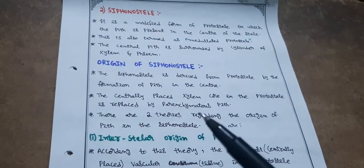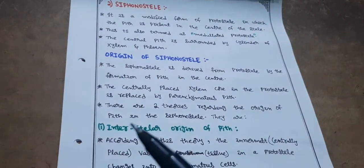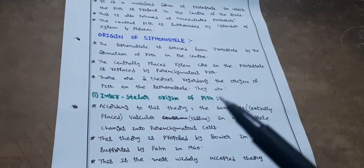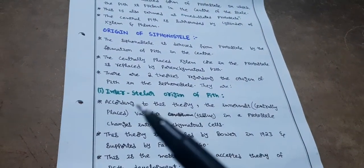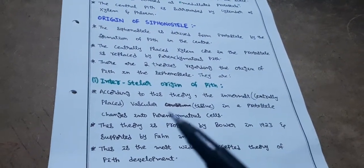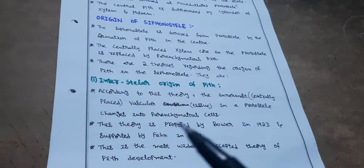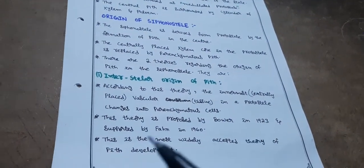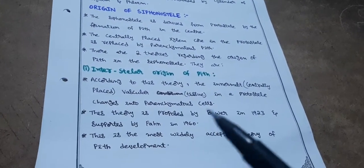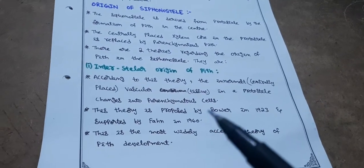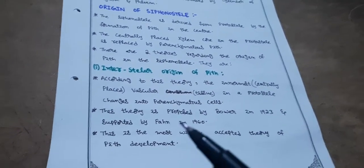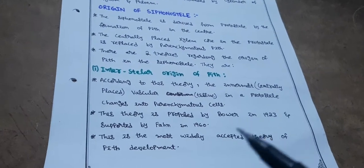There are two theories regarding the origin of pith in siphonostele: intrastelar origin of pith and extrastelar origin of pith. According to intrastelar origin, the centrally placed vascular tissue in a protostele changes into parenchymatous cells forming the pith. This theory was proposed by Bower in 1923 and supported by Fahn in 1960, and is the most widely accepted theory of pith development.